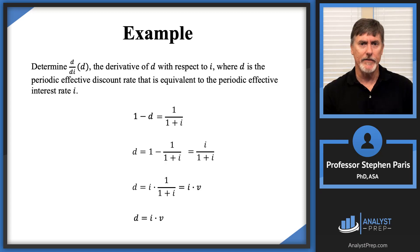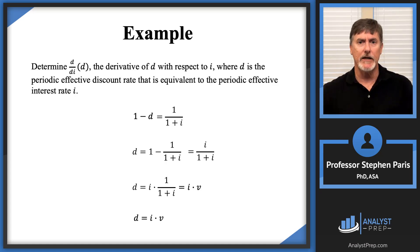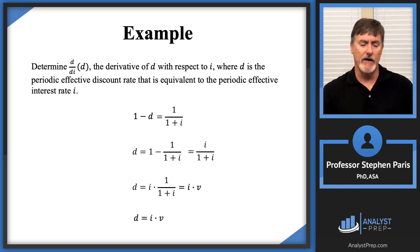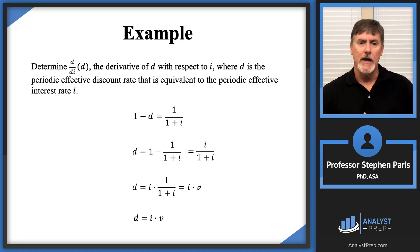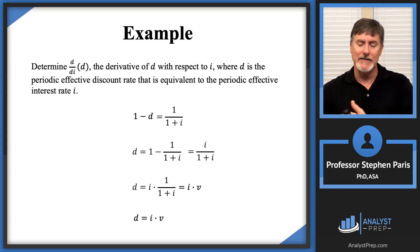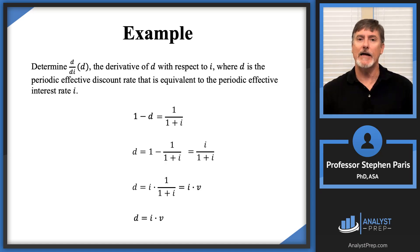The reason I want to write it this way is because of what we've been saying all along: interest is paid at the end of the period, discount is paid at the beginning. If you've got a value at the end of the period and you want to discount it back to the beginning, you multiply it by V. So I is at the end of the period — when I multiply I times V, that discounts it back to D. So D equals I times V should make sense.